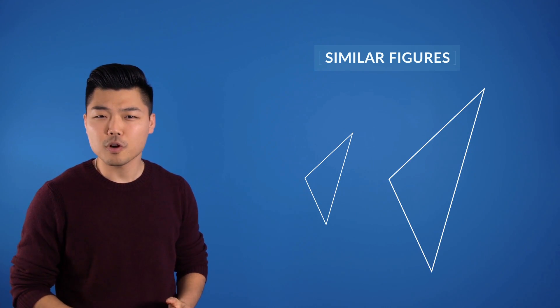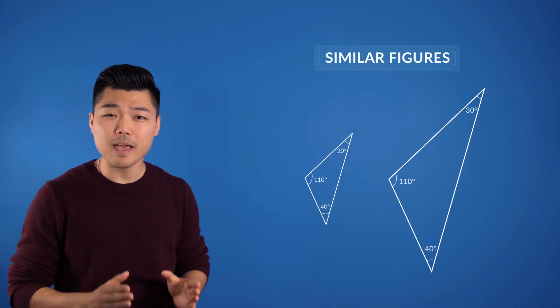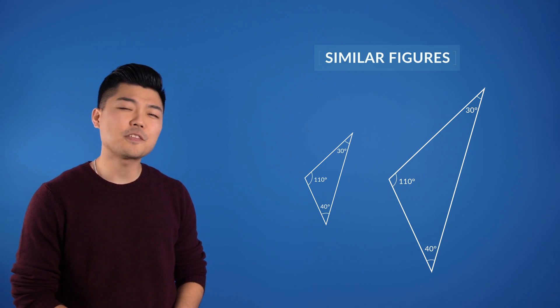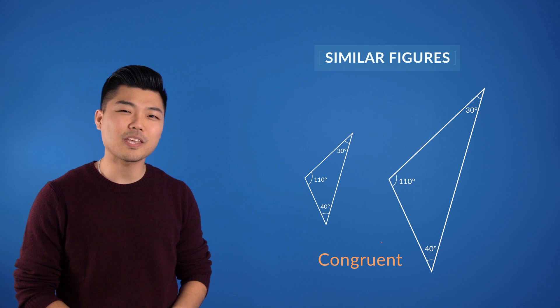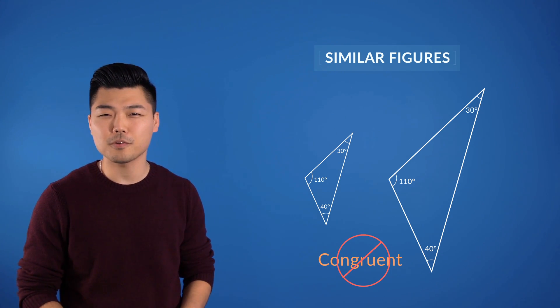Just remember that a triangle can be similar maintaining the same angles. But if it's different in size, then we cannot quite say that the triangles are congruent.